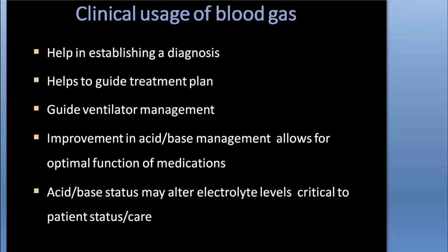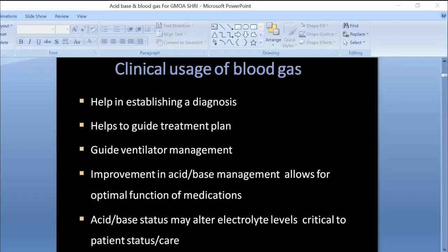For a quick technical review: the ABG machine has three measurement electrodes — pH, pCO2, and pO2. Additionally, there is co-oximetry, though most of our ABG machines in our setting do not have co-oximetry. The machine also provides electrolytes and metabolites.